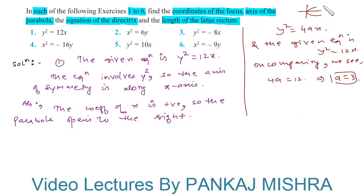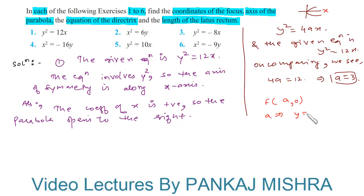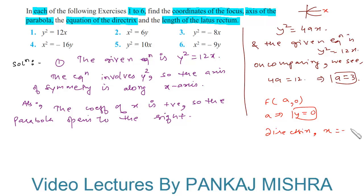We know that the focus of a parabola which opens to the right and is symmetric along the x-axis is given by (a, 0). The axis of the parabola is y = 0. The equation for the directrix is x = −a, and the length of the latus rectum is 4a.